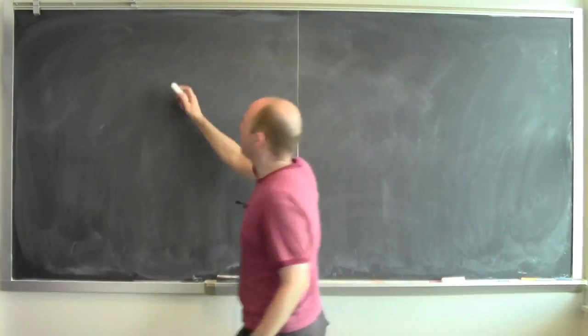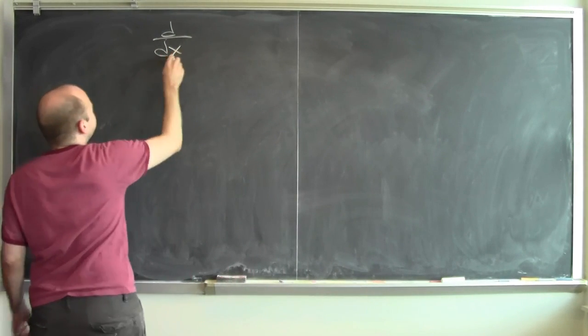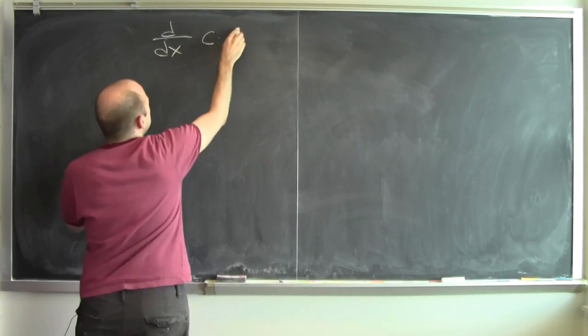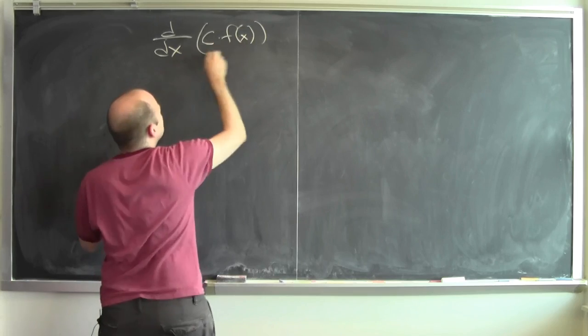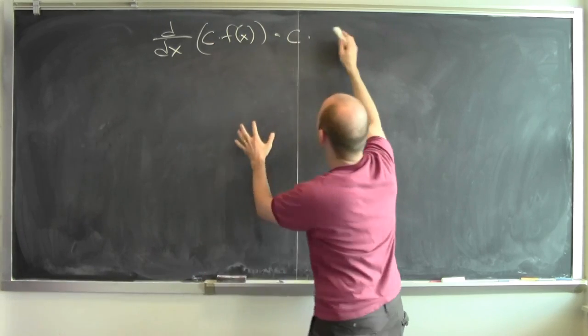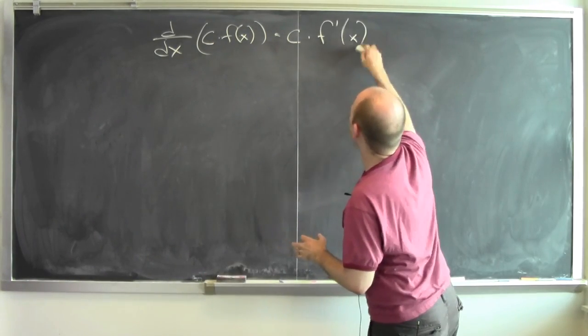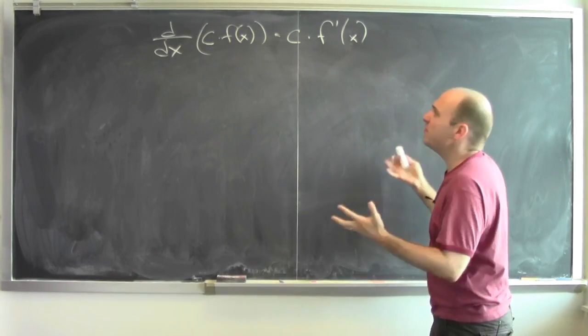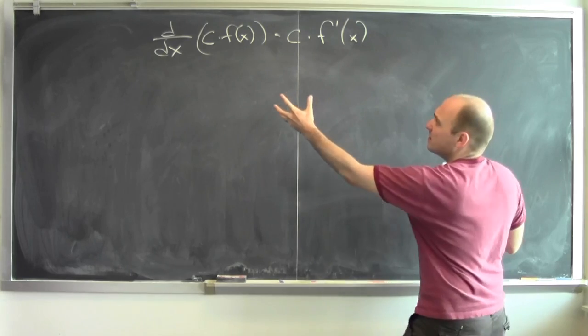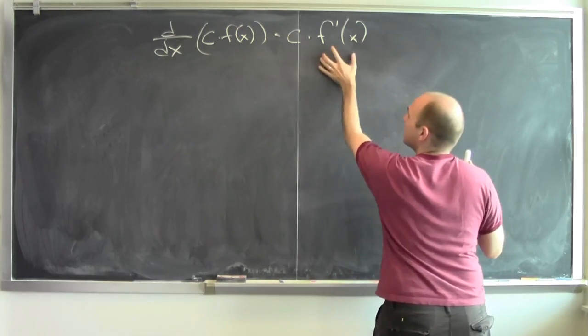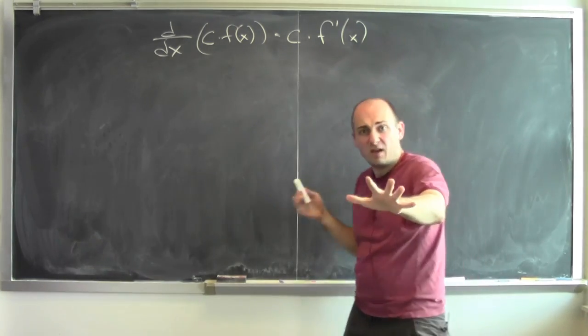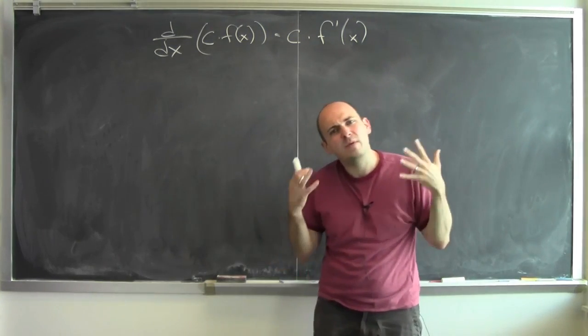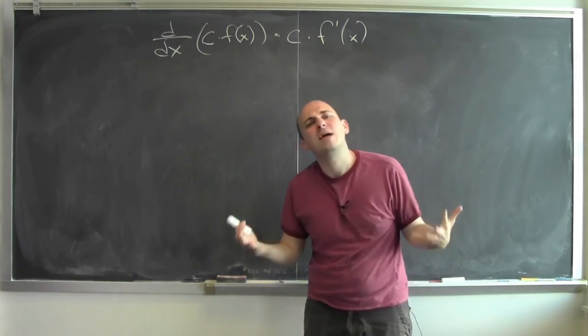You've seen these facts, right? That if I say differentiate c times some function f of x, this is the same as c times the derivative of f at x. These are sort of reasonable derivative rules. The derivative of a constant times a function is the constant times the derivative of the function. You maybe know that rule, but let's do some examples to see why something like this should be true.